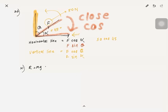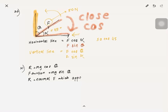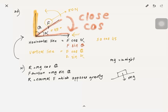Number 21: For an object on an inclined plane, the normal reaction force R = mg cos θ, and the frictional force F_friction = mg sin θ. R is the normal reaction force that opposes gravity. mg (weight) acts downward, and R acts perpendicular to the surface opposing gravity.